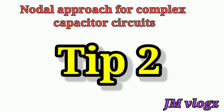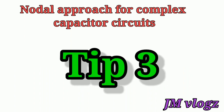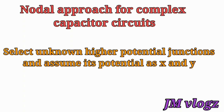Tip number two: we select a lower potential junction and assume the potential of that junction as zero. Tip number three: we select a higher potential junction and assume its potential as X. According to the circuit this may vary — sometimes there are two unknown junctions, and then we call them X and Y.